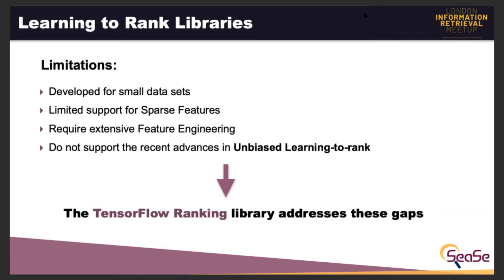Some learning to rank libraries have important limitations. First of all, they were developed for small datasets and do not scale well to massive training examples that are common in real-world applications. Second, they have very limited support for sparse features and require extensive feature engineering techniques to handle textual features. Third, they do not support the recent advances in unbiased learning to rank.